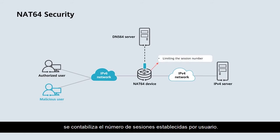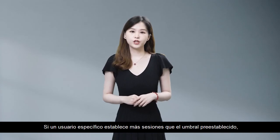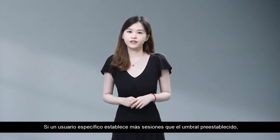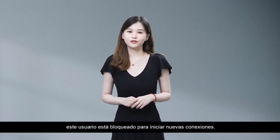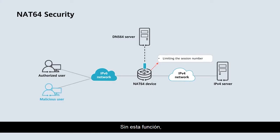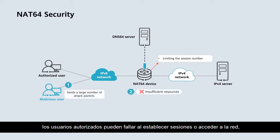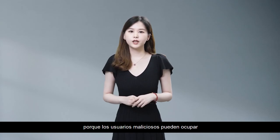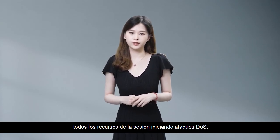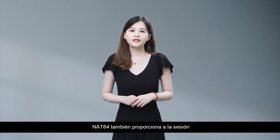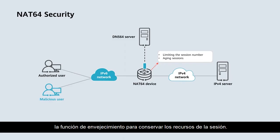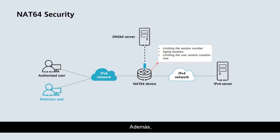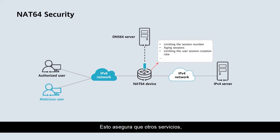After this function is used, the number of sessions established on a per-user basis is counted. If a specific user establishes more sessions than the preset threshold, this user is blocked from initiating new connections. Without this function, authorized users may fail to establish sessions or access the network, because malicious users may occupy all the session resources by initiating DOS attacks. NAT64 also provides the session aging function to conserve session resources, and it can limit the rate at which user sessions are created. This ensures that other services as well as NAT64 can obtain forwarding resources.